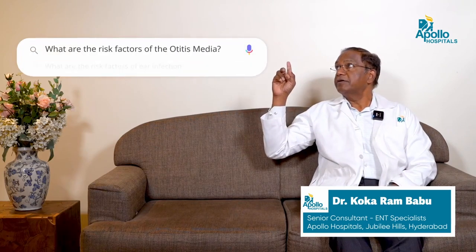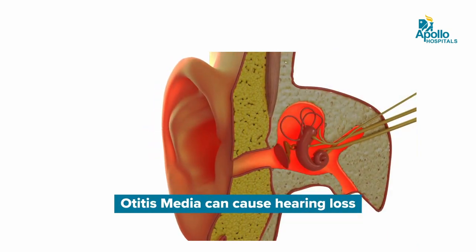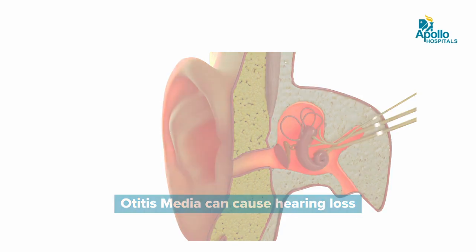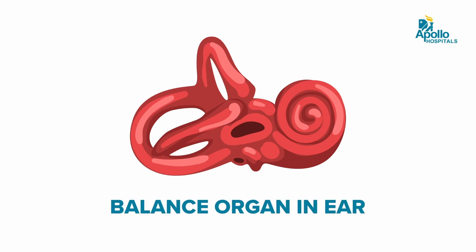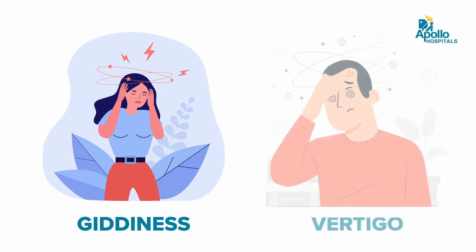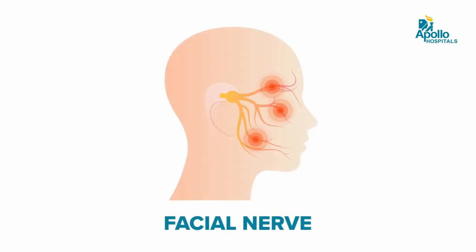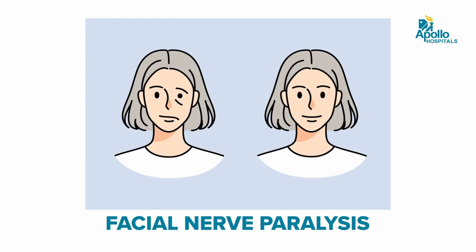What are the risk factors of Otitis Media? Otitis Media is infection in the middle ear, and the middle ear has many important functions. One is hearing, which can get affected immediately whenever there is an infection. There are other important structures like the balance organ, so patients can also have balance problems such as giddiness and vertigo. The facial nerve runs through the middle ear, and whenever there is an infection it can get affected, leading to facial nerve paralysis — weakness on the side of the face where the infection is present.